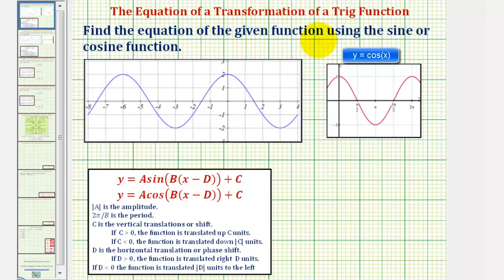We want to find the equation of the given function, graphed here in blue, using the sine or cosine function. We'll find our equation in one of these two forms, where the absolute value of a is the amplitude, two pi divided by b is the period, c affects the vertical shift, and d affects the horizontal shift.